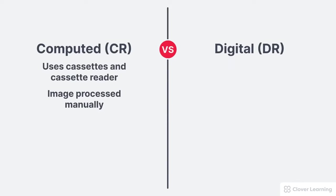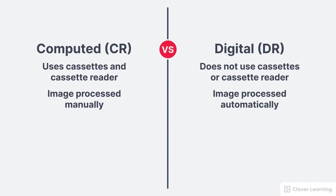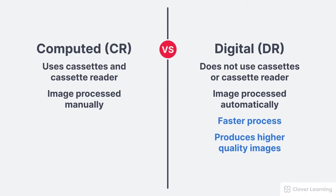Direct and indirect conversion digital radiography are different from computed radiography in that they do not use cassettes or standalone cassette readers. Additionally, the image processing step follows image acquisition, immediately converting the radiographic image into digital data without an operator's involvement. Computed radiography requires the extra step to extract the latent image from the cassettes, so by eliminating these extra steps, digital radiography systems are faster and can produce higher quality images than computed radiography.